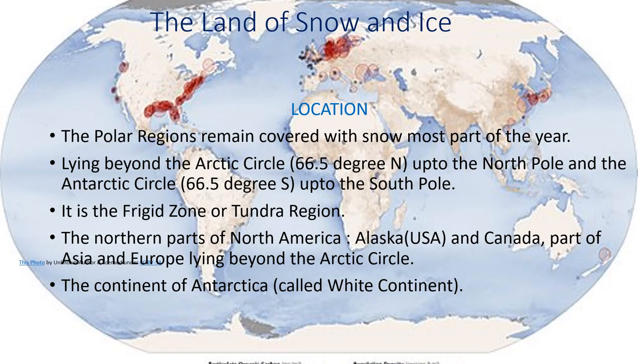The polar regions — location of the regions. The polar regions remain covered with snow for most part of the year, lying beyond the Arctic Circle at 66.5 degrees north up to the North Pole, and the Antarctic Circle at 66.5 degrees south up to the South Pole.